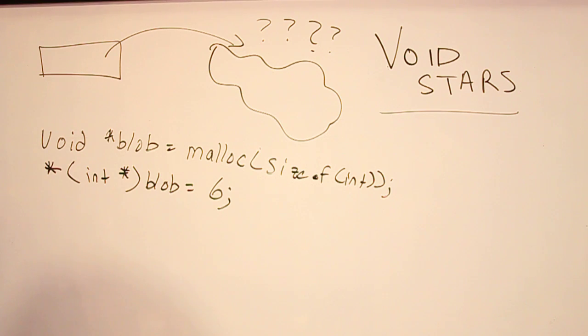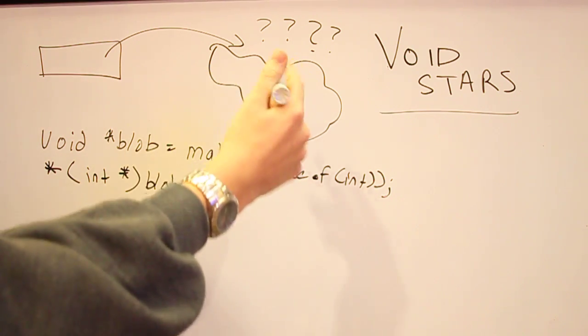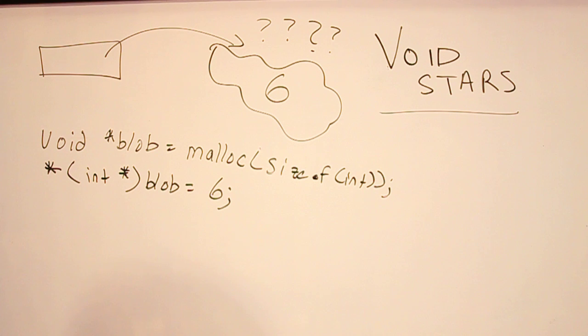So, okay. Now, C goes out into the heap, and it's like, alright, this is an int. Cool. One, one, six. Great. So, that's how you use a void star in general.